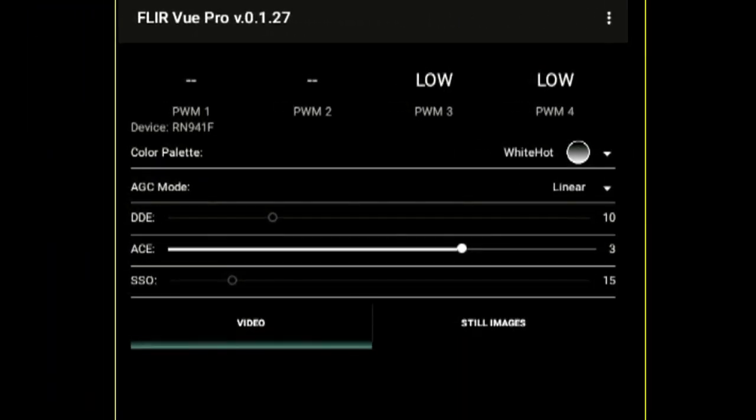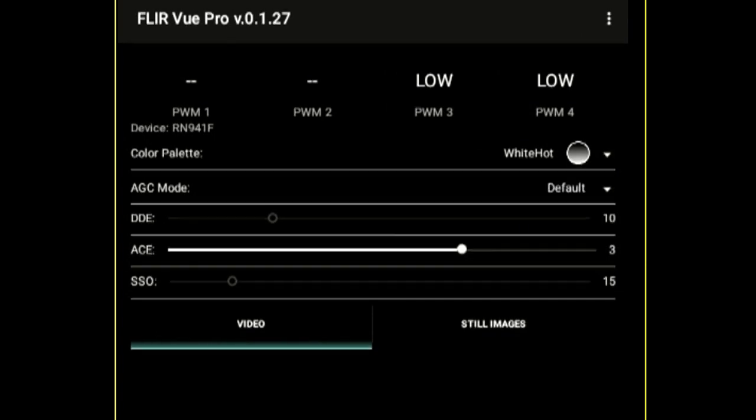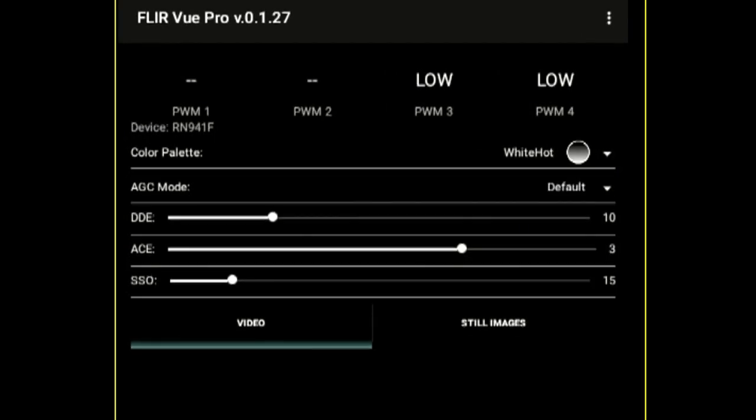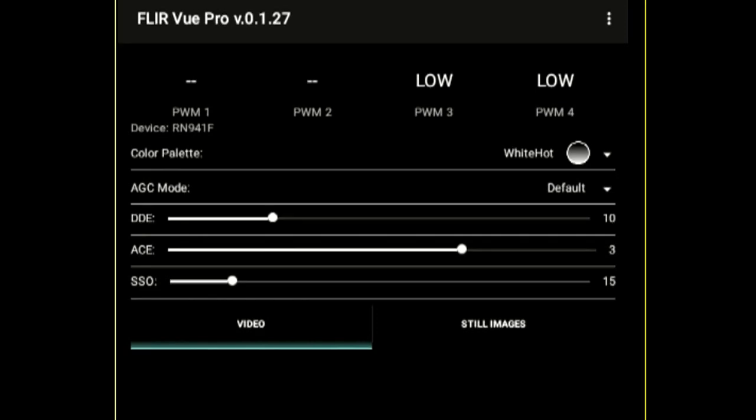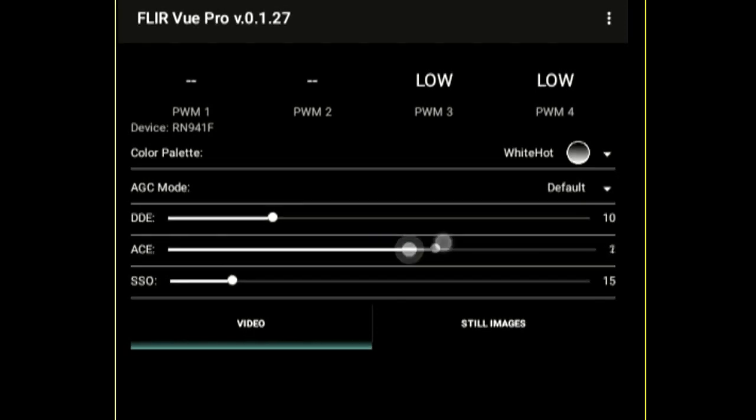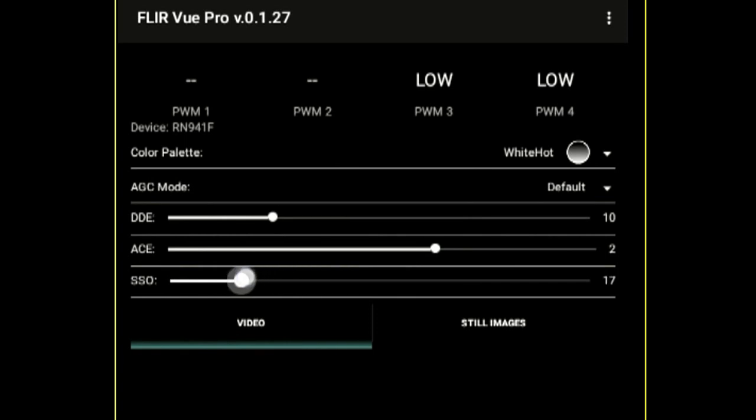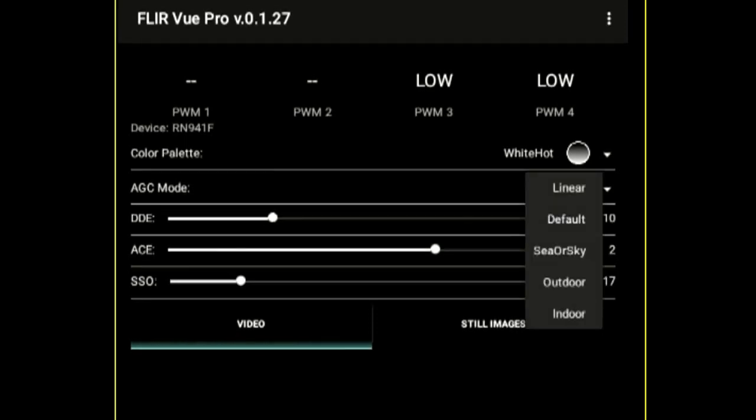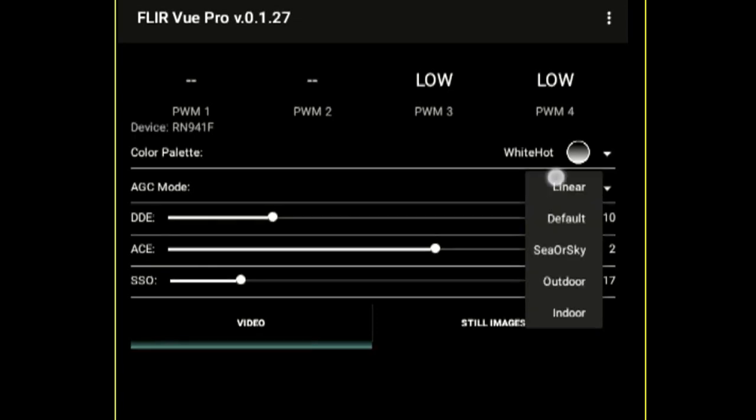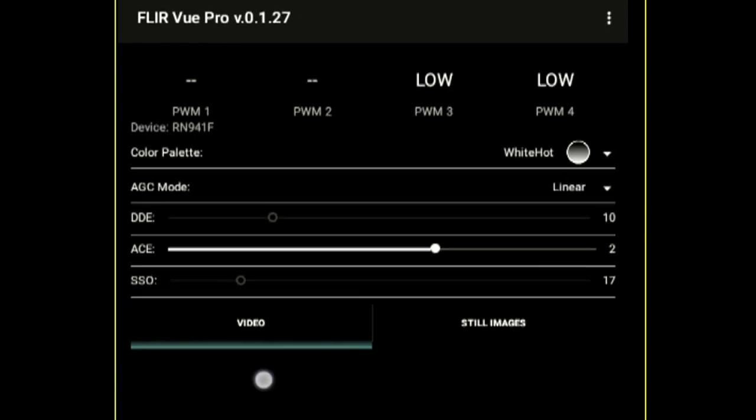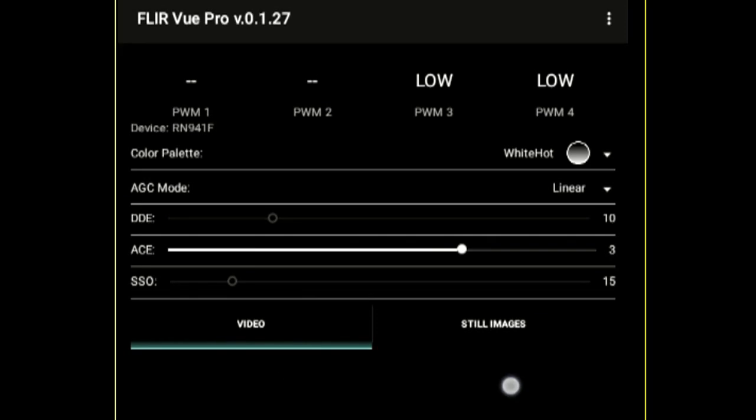We also have our automatic gain control which if you change from linear to anything else actually it lights up a few more options. So we have our sharpness value, DDE, we have our automatic contrast control, we have our smart scene detection. Basically it adjusts the picture, the percentage that's light and dark. Play with these until you get a picture. Essentially has different options. Let's go linear. We can choose either video or still image capture. From this interface we can do a recalibrate which triggers a flat field correction which helps retain image quality, or we can hit record.